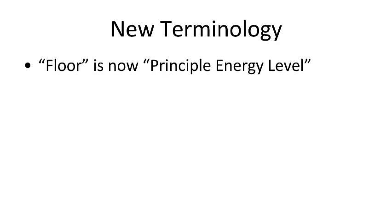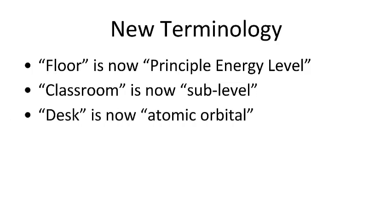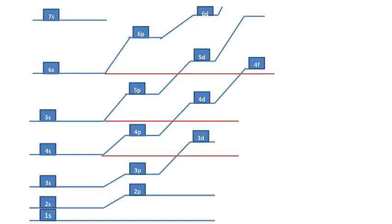We just need to change the words that we're using. So for example, instead of floor, we're now going to call that principle energy level, or sometimes just energy level. Instead of the word classroom, we're going to use the word sublevel. Instead of the word desk, we're now going to use the phrase atomic orbitals. And then finally, our students are the electrons in an atom.